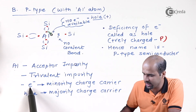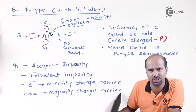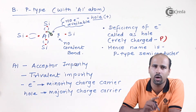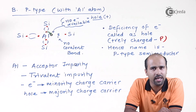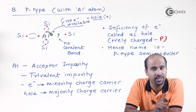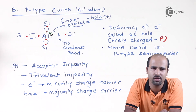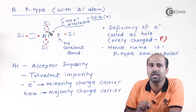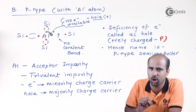In P-type semiconductor, electrons are minority charge carriers and holes are majority charge carriers, because one aluminum atom gives one hole. Conversely, in N-type semiconductor, electrons are the majority charge carriers and holes are the minority charge carriers.